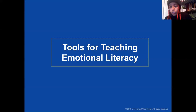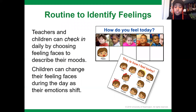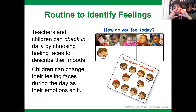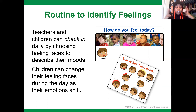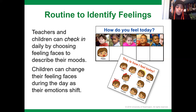Now we're going to go to tools for teaching emotional literacy. A good tool is a daily routine to identify feelings — teachers and children can check in daily by choosing feeling faces to describe their moods, and children can change their feeling faces during the day as their emotions shift. If you have pictures of all your children including yourself on a wall with different emotional stickers, at the beginning of the day you can ask, 'How are you feeling?' and they can put the sticker that matches next to their name, associating themselves with that emotion. You could then ask, 'Oh, you're feeling happy today — why?' or 'You're feeling sad — what happened?'